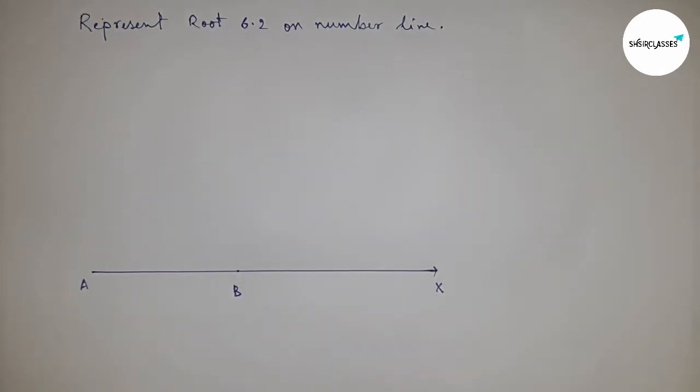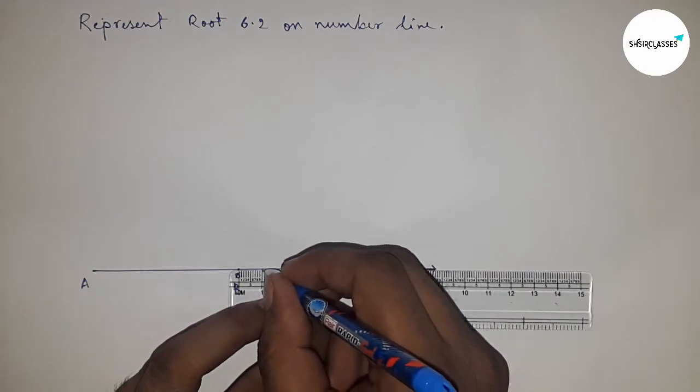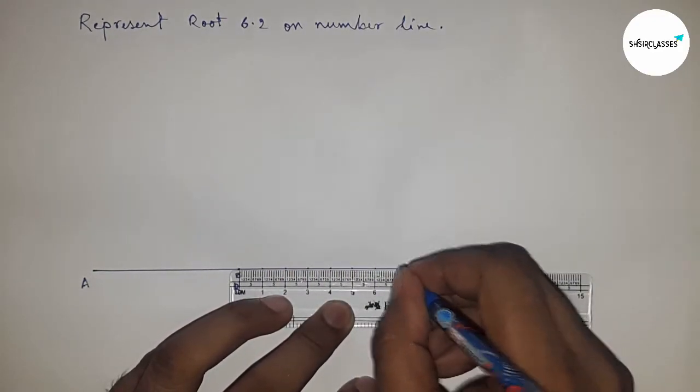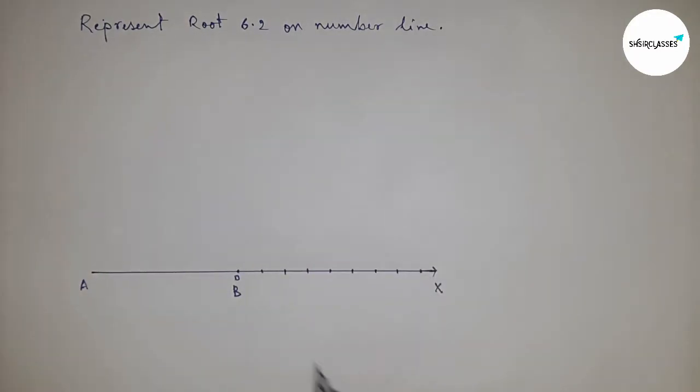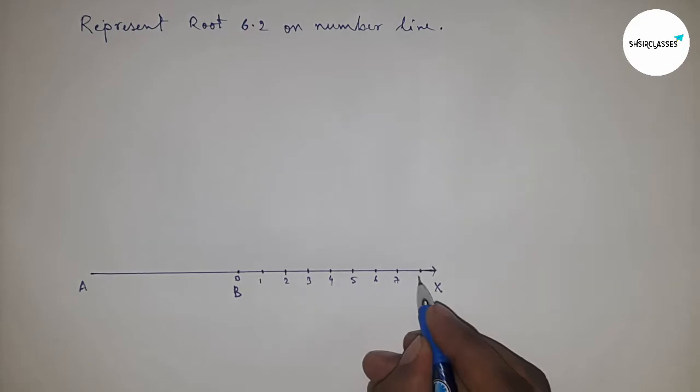And this is also starting number zero. Now taking or mark the number on the line: this is one, two, three, four, five, six, seven, eight. This is C point.